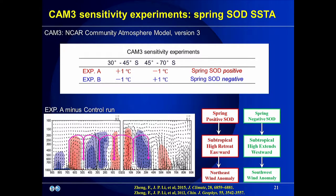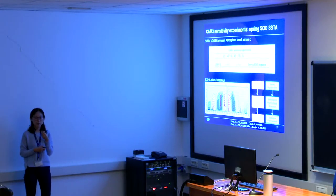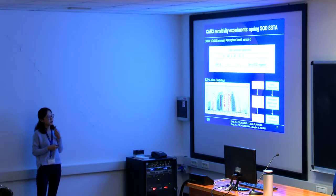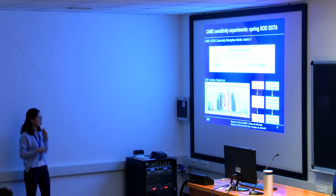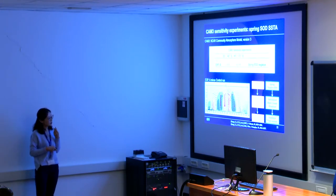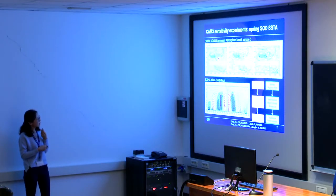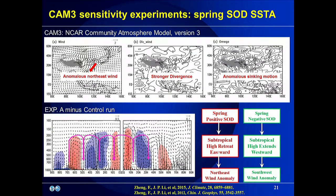We use sensitivity experiments to verify the above results. Two experiments correspond to positive and negative SOD phases. This figure shows the vertical circulation anomalies obtained by experiment A minus the control run. In the Northern Hemisphere subtropics, there is anomalous descending motion. Meanwhile, in the lower troposphere, there is anomalous northeast wind, stronger divergence, and stronger sinking motion. These results are consistent with the statistical analysis from the reanalysis data.